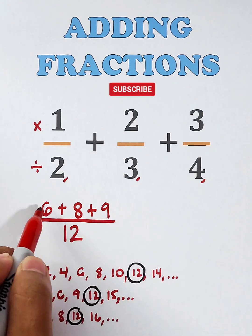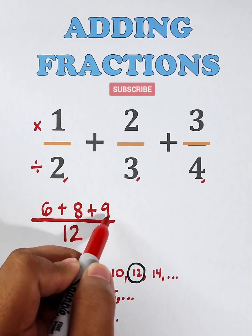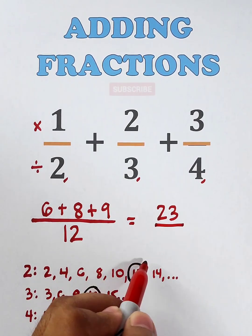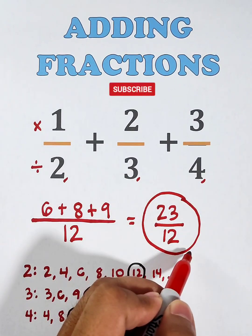Let's add the numerators. 6 plus 8 is 14, plus 9, that would be equal to 23. Then, copy your denominator, 12, and this is now the sum of the 3 given fractions.